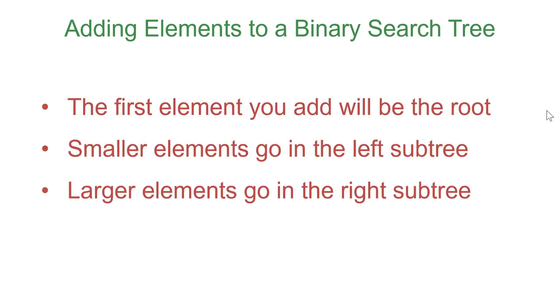So to review, when you're adding elements to a binary search tree, the first element will always be the root, and then add smaller elements to the left subtree, larger elements to the right subtree, and when you're adding to a subtree, the same rules apply. So you would go left and right based on whether it's smaller or greater than what you're looking at.